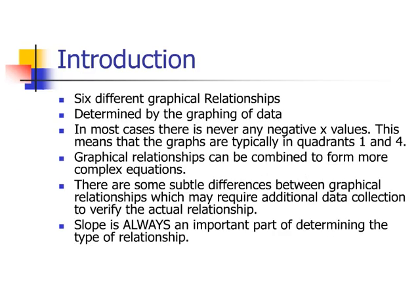With a subject like graphical relationships, you would automatically anticipate that it is created by graphing data. Now there are some things about graphical relationships that you need to be aware of. First, there are six different types of graphical relationships. We never have any negative x values, so when you talk about these kinds of graphical relationships, you're talking about graphs that take place in quadrant one and quadrant four, more often quadrant one.